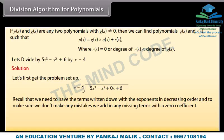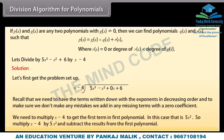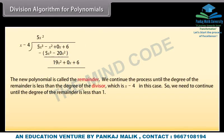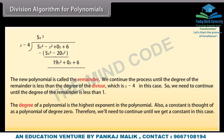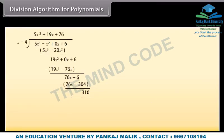To make sure we don't make any mistakes, we add in any missing terms with a zero coefficient. We need to multiply x minus 4 to get the first term in the first polynomial — in this case that is 5x squared. We multiply x minus 4 by 5x squared and subtract the results. The new polynomial is called the remainder. We continue the process until the degree of the remainder is less than the degree of the divisor, x minus 4. Since a constant is a polynomial of degree 0, we continue until we get a constant.